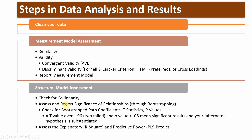The next step is to report the significance of relationships. In SEM software, this is primarily done through bootstrapping. Once the bootstrapping procedure has been done, you check the path coefficients, t-statistics, and p-values.